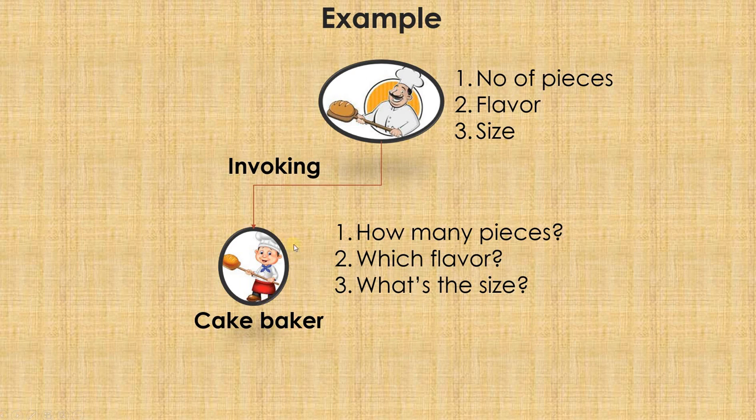I can call him and order as many times whenever I get the order of a cake. This process of calling him is called as invoking. And while I am communicating with the cake baker, whatever is the information that I am passing are called as arguments. On the other hand, whatever is being passed into the function are called as parameters.